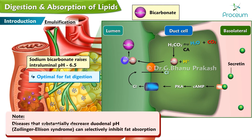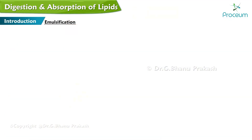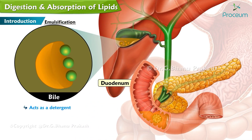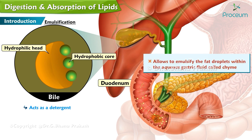Note that diseases which substantially decrease duodenal pH, such as Zollinger-Ellison syndrome, can selectively inhibit fat absorption. The major portion of fat emulsification takes place in the duodenum. Bile from the gallbladder is introduced into the second part of the duodenum. Bile acts as a detergent with a hydrophilic head and a hydrophobic core that allows it to emulsify fat droplets within the aqueous gastric fluid called chyme.